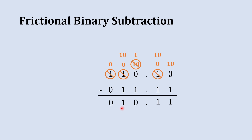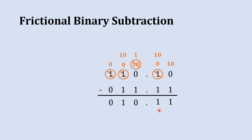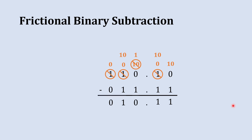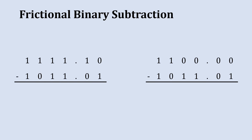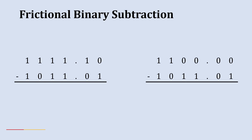The answer of the final subtraction is 10.11. To verify, convert both binary numbers to decimal, perform decimal subtraction, and check that the result matches the binary answer. Two practice problems are provided — solve them and write your answers in the comments. To learn binary multiplication and division, or arithmetic with octal and hexadecimal numbers, refer to the linked videos and playlists. See you in the next video.